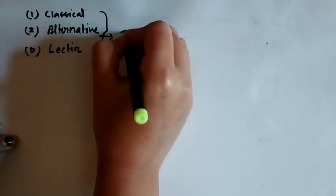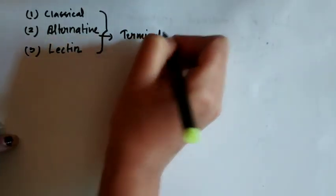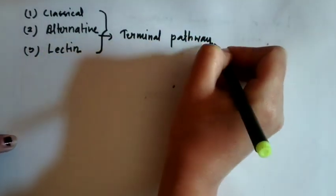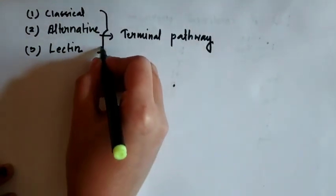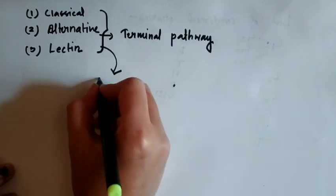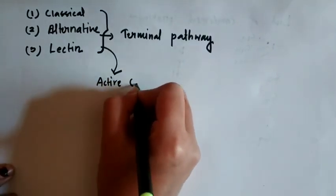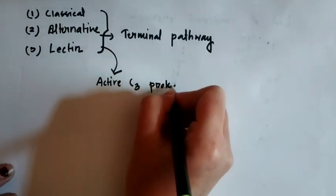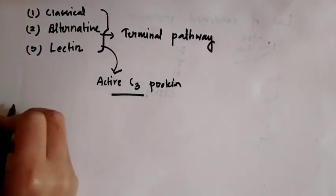The complement system is activated by three pathways: the classical pathway, the lectin pathway, and the alternative pathway. All three pathways are terminated by the terminal pathway, and all these pathways are activated by the formation of active C3 protein.